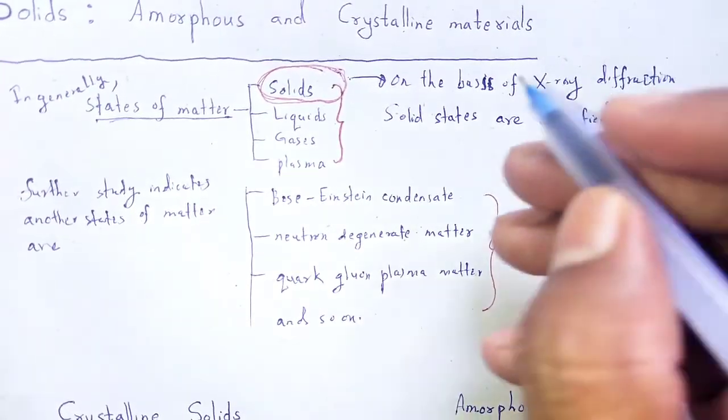There is a long range order in the structure of crystalline solids. In amorphous solids, there may be only short range order because particles are arranged regularly only up to a small region. Crystalline solids have a sharp melting point — they suddenly convert into liquid state at a definite temperature. Amorphous solids do not have a sharp melting point; the solid first softens and then finally melts.